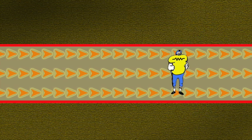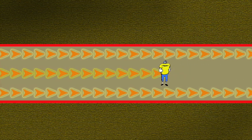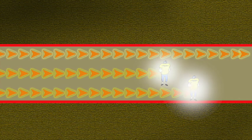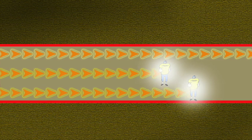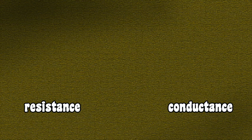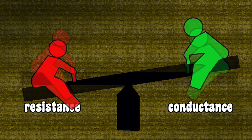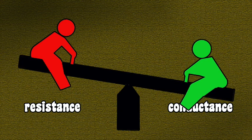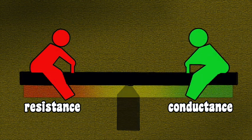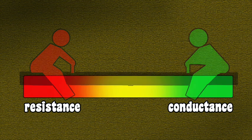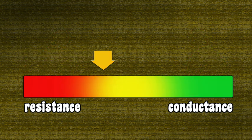But some materials offer more resistance, making it difficult for the electrical current to flow through them. These materials have poor conductance. Much of the electrical energy is lost as heat. Resistance and conductance are like the two sides of a teeter-totter. If you have low resistance, you have high conductance. If the resistance is high, conductance is low. And like a teeter-totter, resistance and conductance aren't either-or, or on or off. A material can have high resistance, or low resistance, or be someplace in between.